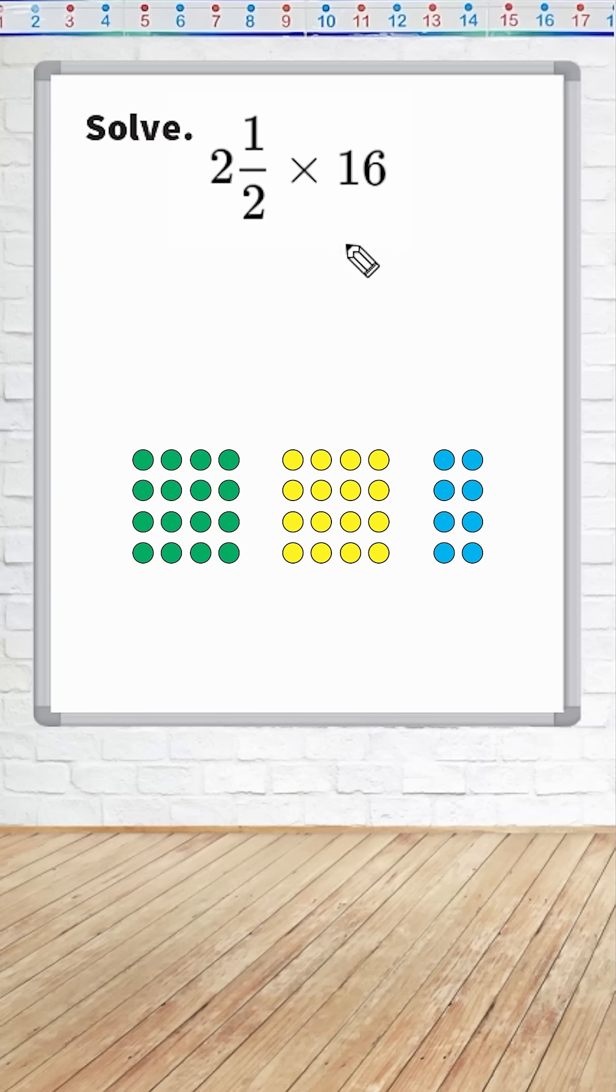Now let's say you wanted to apply the standard algorithm to solve. You would start by renaming this mixed number as an improper fraction, and you begin by just writing the denominator as it is, that is not going to change.